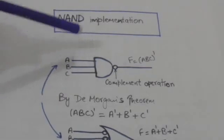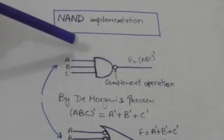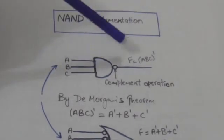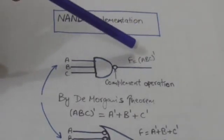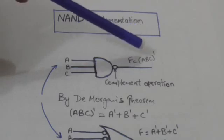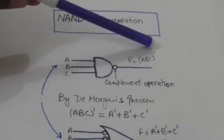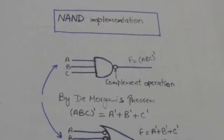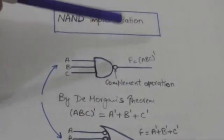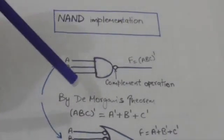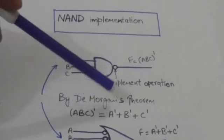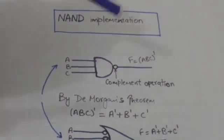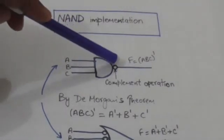Now look at this NAND gate for three inputs A, B, and C. It performs the function F which equals the complement of A AND B AND C. By De Morgan's theorem, the complement of A AND B AND C equals A complement plus B complement plus C complement.